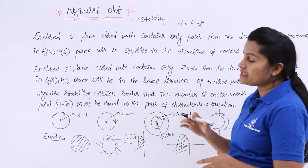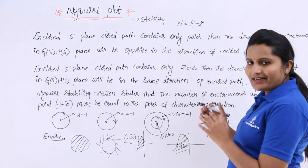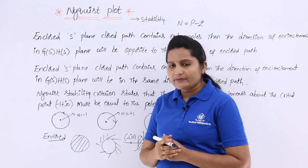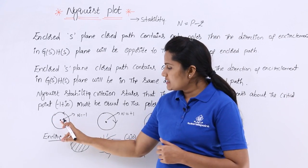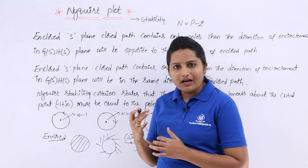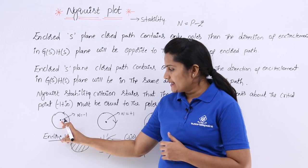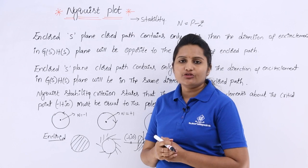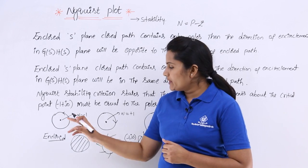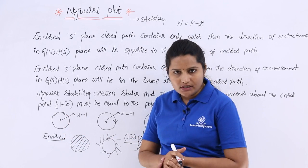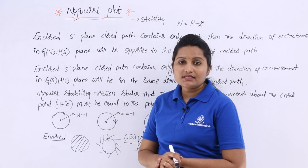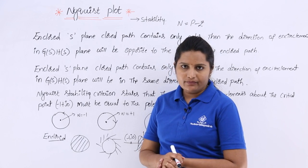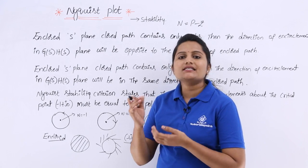N = P - Z. If you observe, when you are having any poles, the N value you need to consider is equivalent to minus 1, because you are having only poles — those right-sided poles each contribute minus 1.